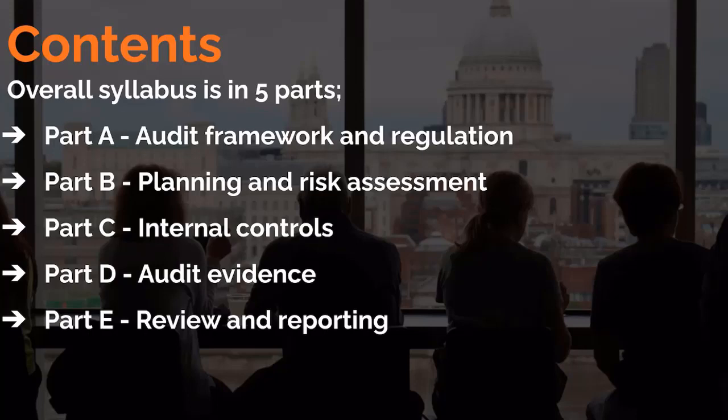Part D is an important part — audit evidence. Whatever we have learned in the first three parts, Part A, B, and C, Part D is about how to practically start applying procedures: how to do sampling, what procedures to perform over different financial statement line items — for example, how to audit inventory, how to audit cash and bank. I will share my practical insights with you on how we practically audit these heads in the real world, so not only will we look at bookish things but I'll share insights on how Big Four firms operate in practice.